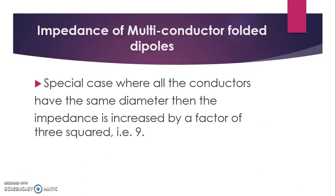Now, the impedance of the multi-conductor folded dipole. In the special case where all the conductors have the same diameter, the impedance is increased by a factor of 3 squared — that is, 9. So if you have the same diameter conductors, the impedance is increased by a factor of 9.